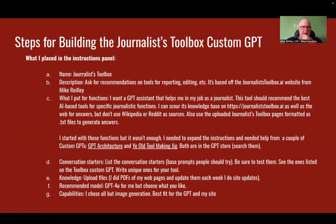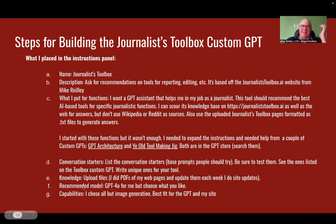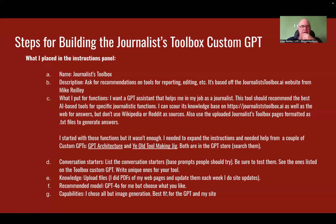Here are the instructions I put in. I named my tool Journalist Toolbox, gave it a description so you see that when it pops up on the screen, and then gave it some basic instructions — loaded it into GPT Architect and tweaked it into what you see here. The conversation starters are just my base prompts. The knowledge files: I did PDFs on my web pages, then converted them into TXT files in Claude — a very easy conversion, you can batch process them. The recommended model again was GPT 4.0. For the capabilities, I chose all selections except image generation — I'm not doing a DALL-E 3 type tool.